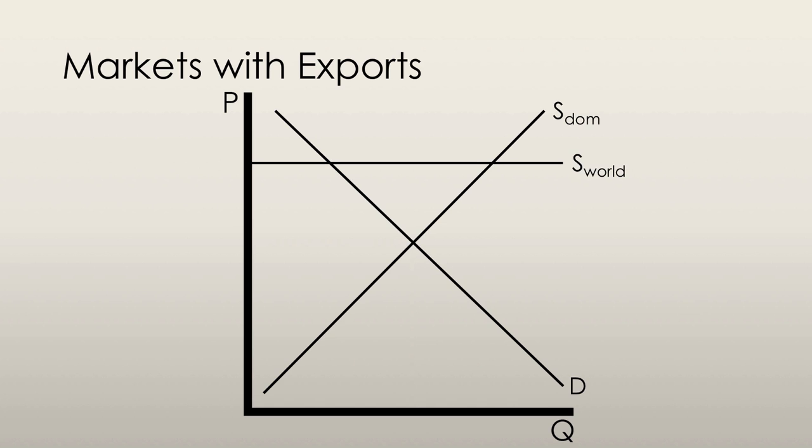If this country opens up to international trade, we see a horizontal world supply curve again. However, this time the world supply curve is higher than the domestic equilibrium price. We'll see why in a moment. The world supply curve, as with the market for imports, is also representative of the equilibrium price for this good, both domestically and in foreign markets.